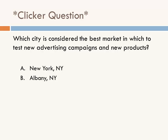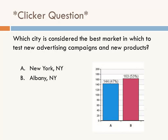An audience member says they'd click B; another clicks A. Jennifer says this is interesting — there's a split. She shows 53% chose Albany, New York. Now people who chose Albany are more confident and willing to explain why. She asks: why do you think half the people selected Albany? An audience member says New York would be too biased or skewed and wouldn't give a representative answer, while Albany feels more representative of the U.S.